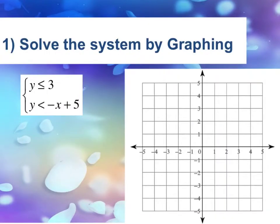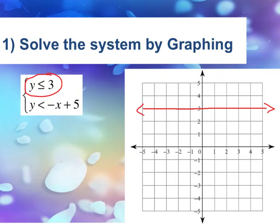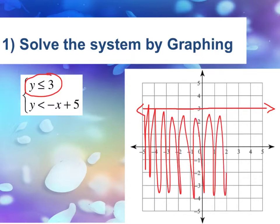Example 1: Solve the system by graphing. Our system contains two variables and two equations. One equation has two variables, the other only has one variable, but we're gonna graph both on the same coordinate plane. I'm going to do the first one in red. Y less than or equal to 3 creates a horizontal line at y equals 3. Since there's a bar underneath the inequality symbol, it is going to be a solid line. Since it's less than, it's gonna be below the graph, so I'm going to shade below that solid line.